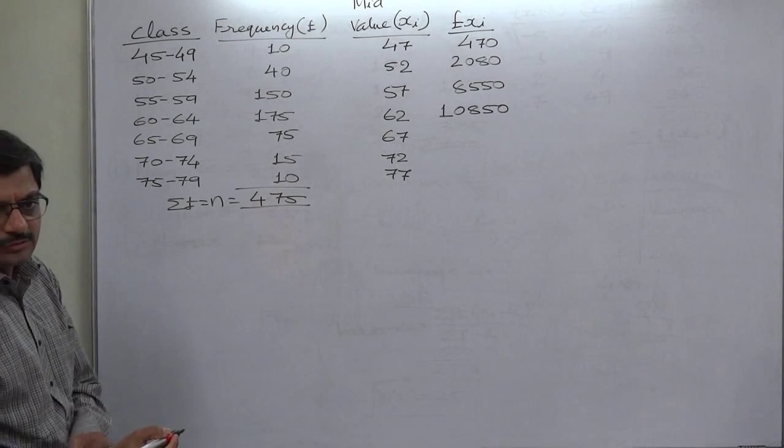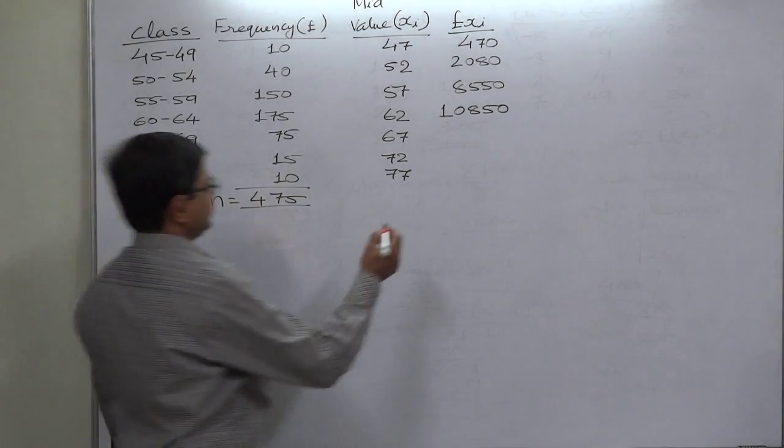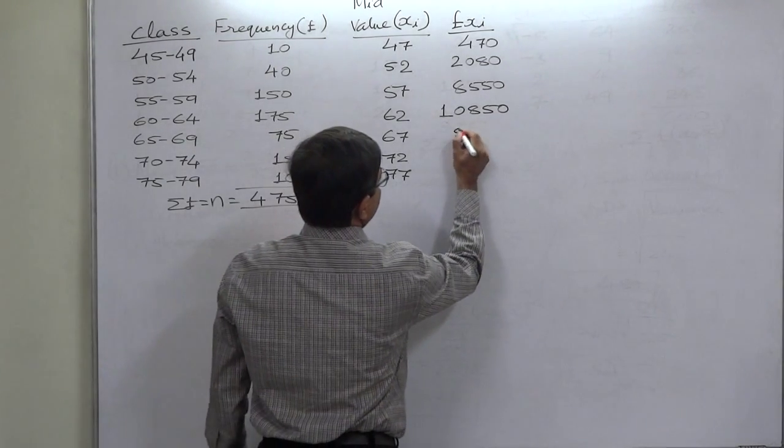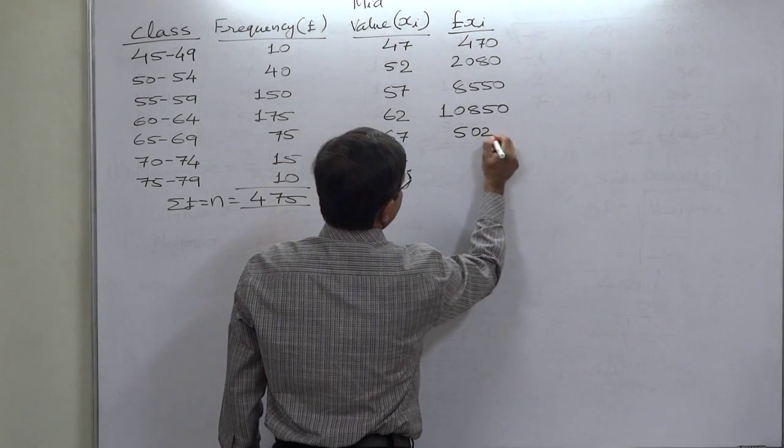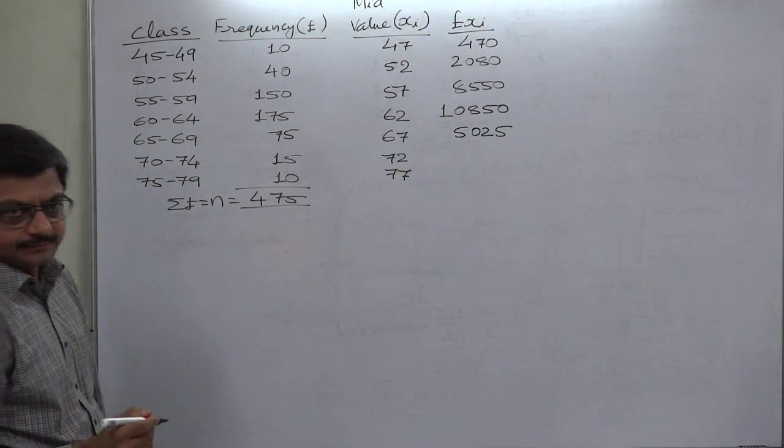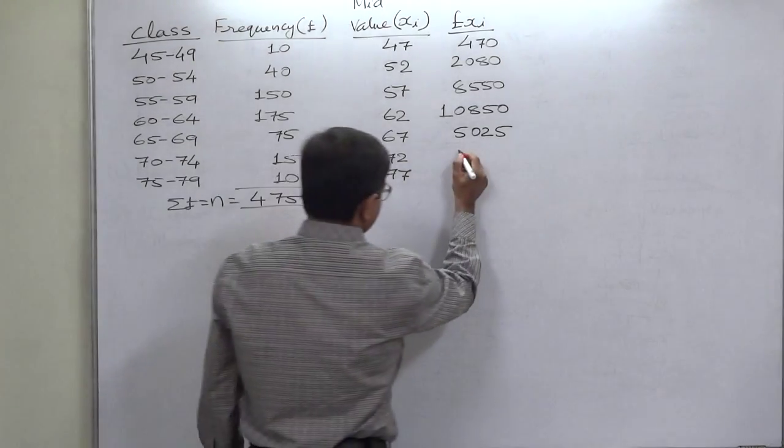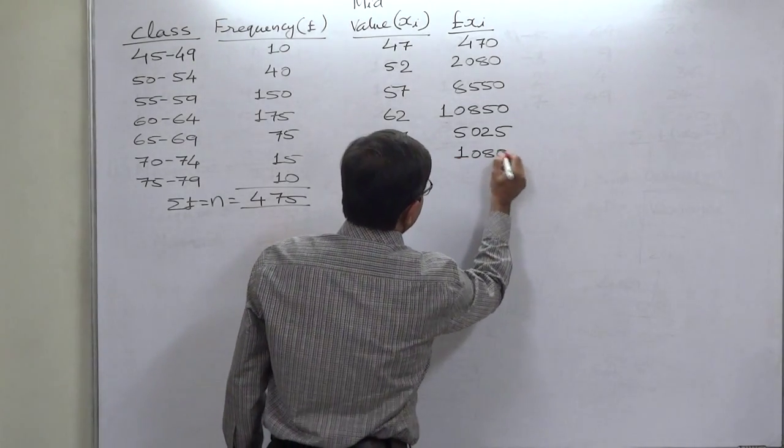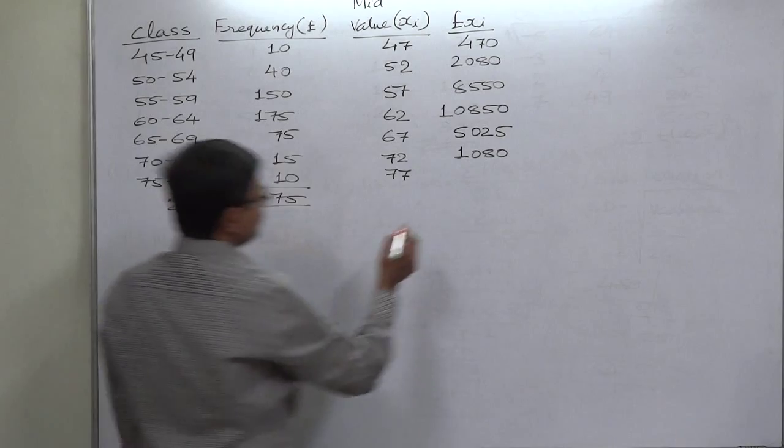67 into 75, 5025. 72 into 50, 3600. And 77 into 10, 770.